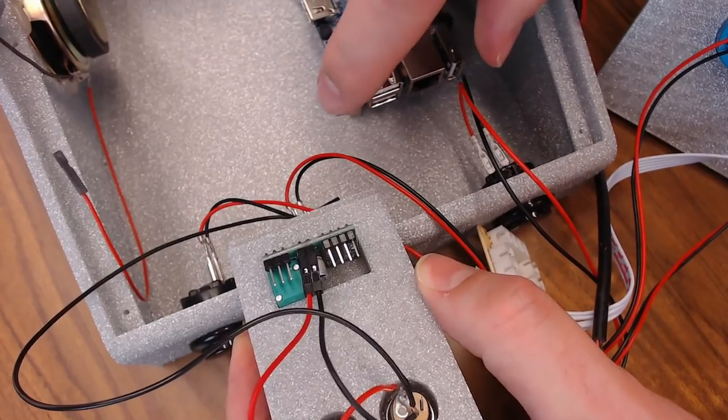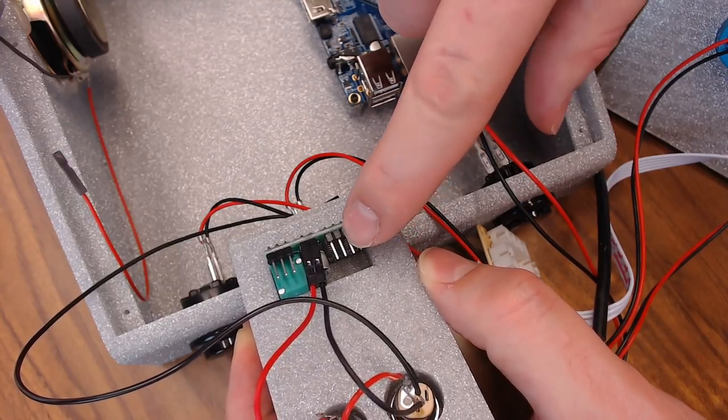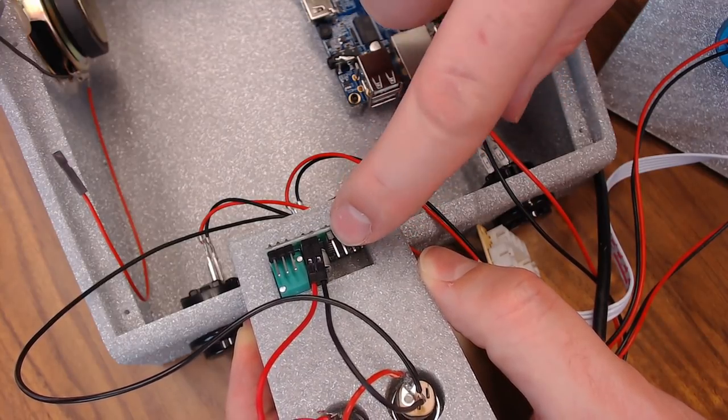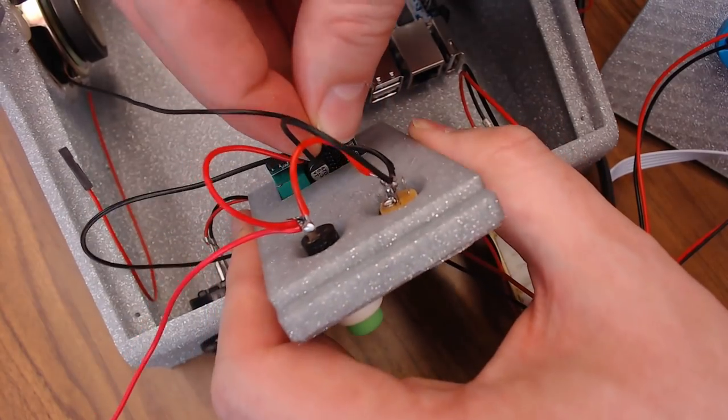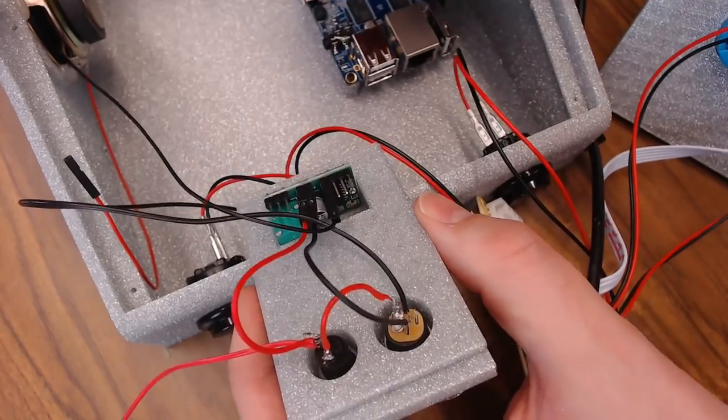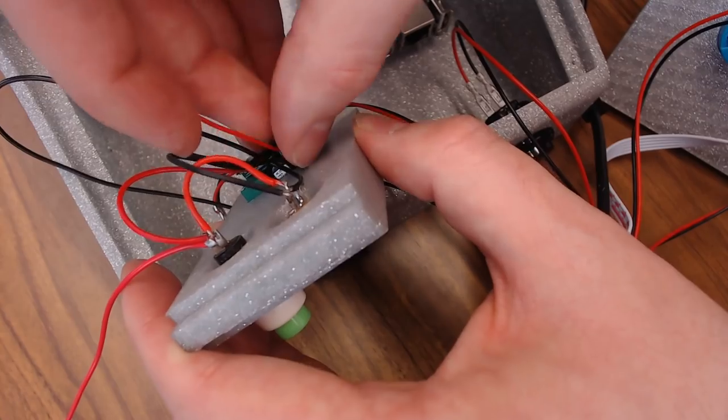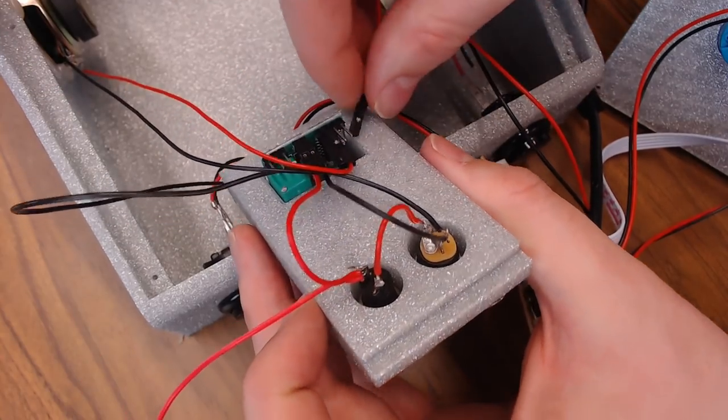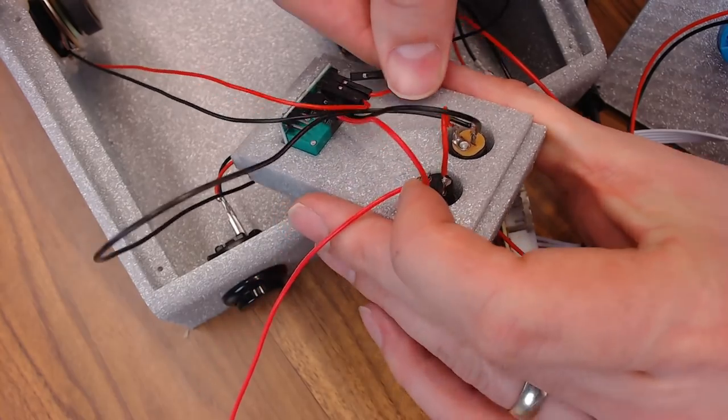Let's go ahead and hook up our speaker output, they're going to go on these pins right here. This is the right negative, this is the right positive, this is the left positive, and this is the left negative. So the left speaker negative wire goes right there. Left speaker positive goes right here. Right speaker positive goes next to that. And then on the outside, right speaker negative, right there.